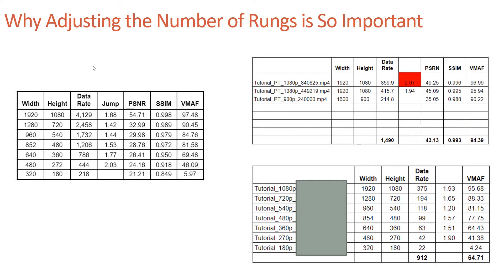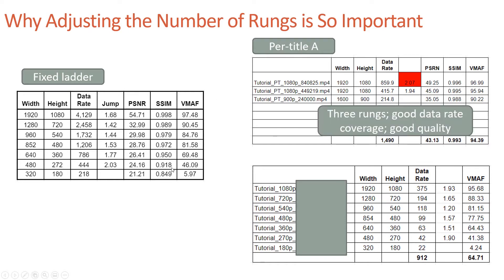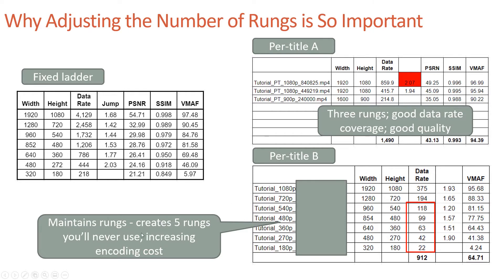Why is adjusting the number of rungs so important? Comparing two per-title encoding technologies against a fixed ladder with seven rungs: per-title A reduces a Camtasia-based video file from seven rungs down to three, with good data rate coverage from 860 down to 215 kilobits per second and all files above 90 VMAF. The second technology creates seven rungs with five below 120 kilobits per second — rungs you'd never use but still pay to encode and store.